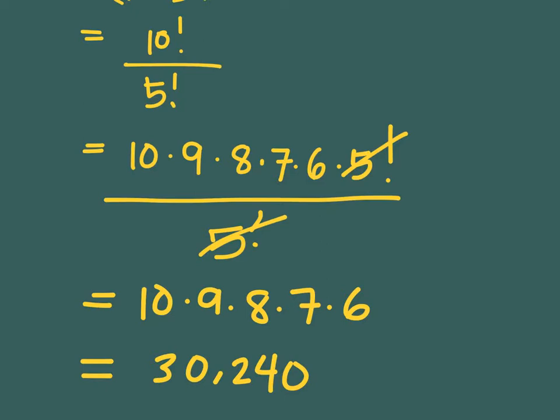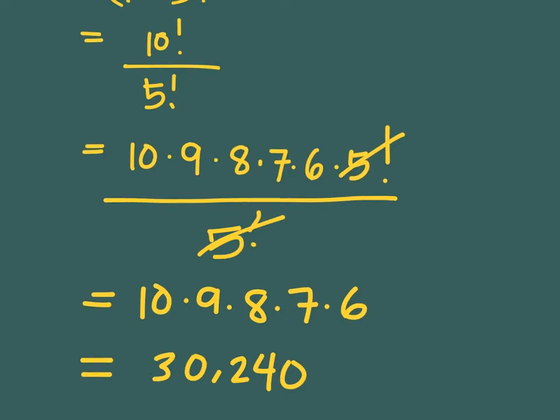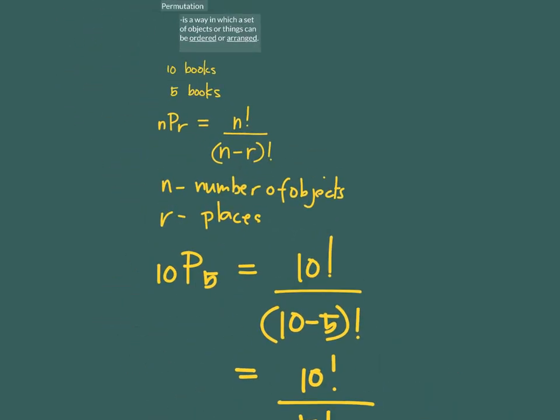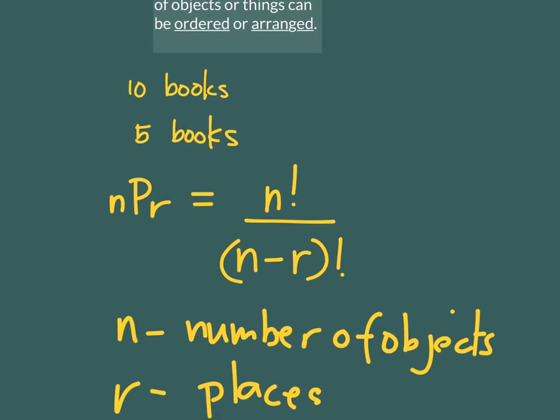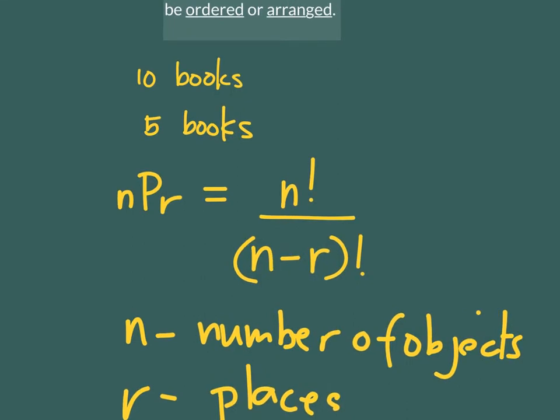That's the number of ways that you can place 5 books on a shelf if you have 10 books to arrange or to get from. To summarize: if a problem is about finding the arrangement given N number of objects and you can only place or arrange a number like R, then the formula is N factorial over N minus R factorial.